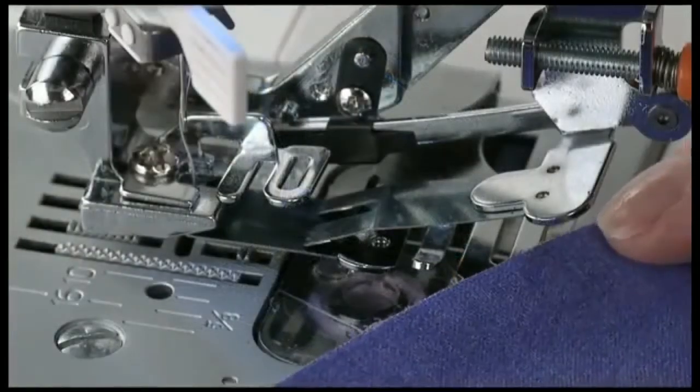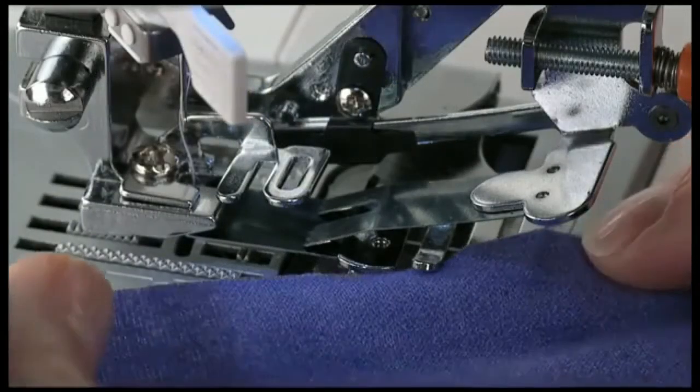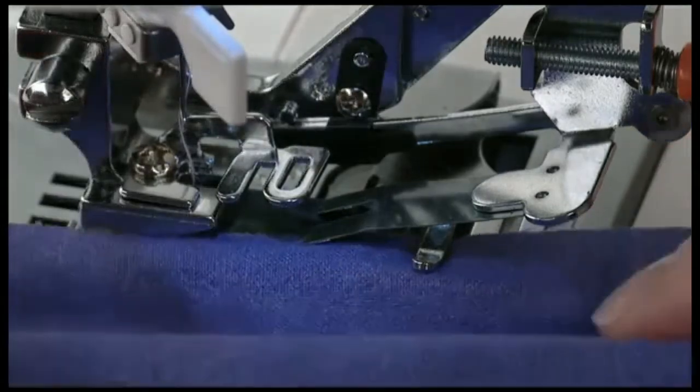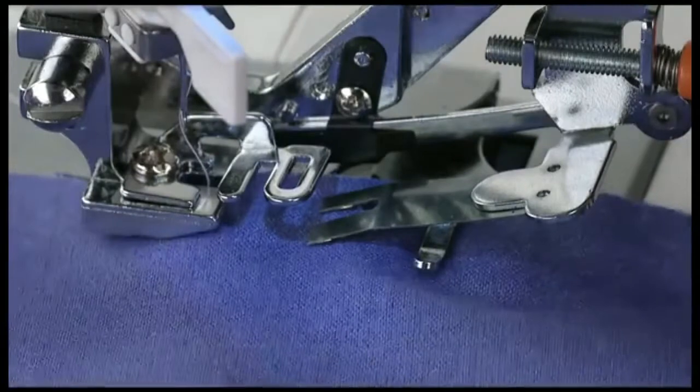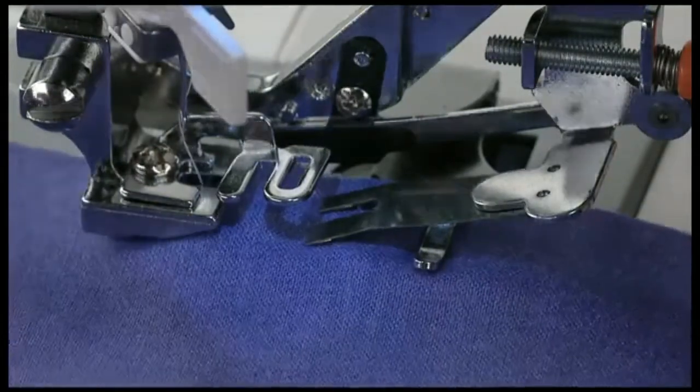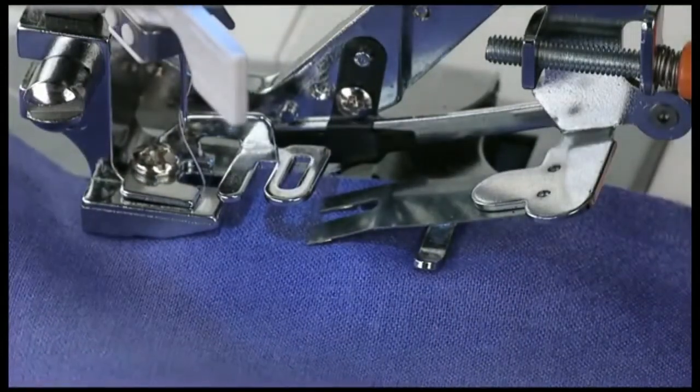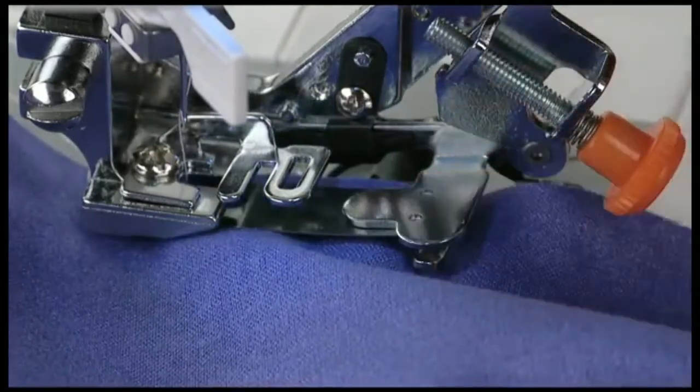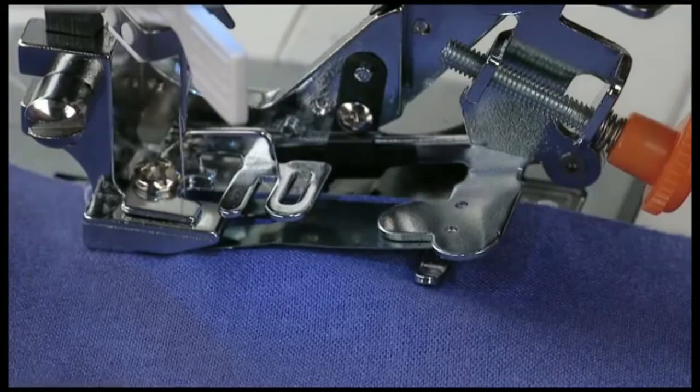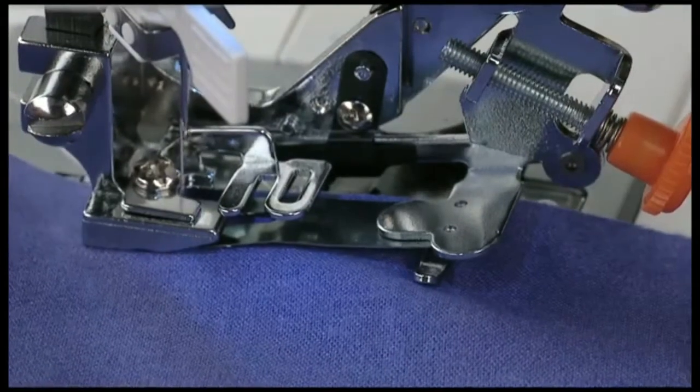To place fabric into the ruffler, bring the fabric into the fabric guide so it is underneath the prong but over the separator blade. The fabric feed plate should be resting on the fabric. Lightly push the fabric feed plate toward the back, lower the presser foot, then lower the needle into the fabric and sew.